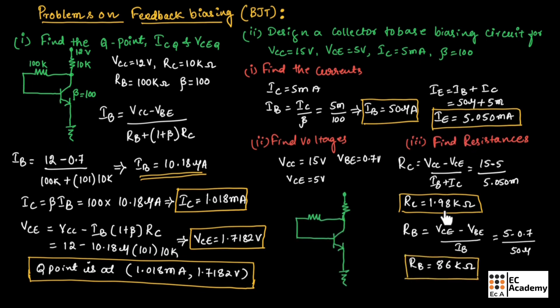After finding all these values, we need to write the circuit and substitute all the values: VCC is 15 volts, RC is 1.98 kilo ohm, RB is 86 kilo ohm, and beta is equal to 100. This is about problems on feedback biasing in BJT. Hope you have understood the topic. Thank you.